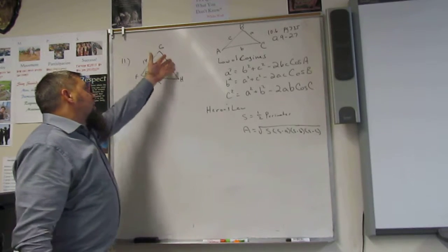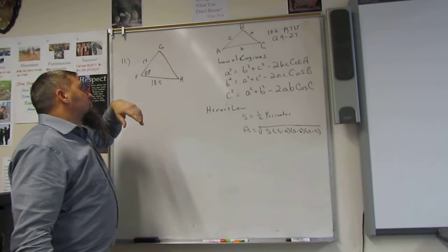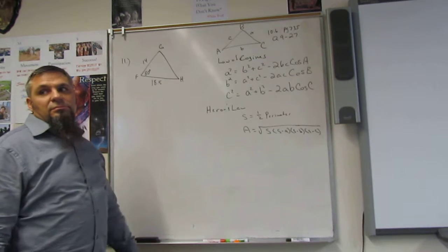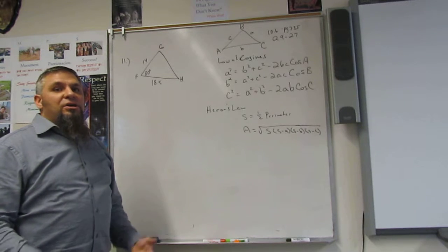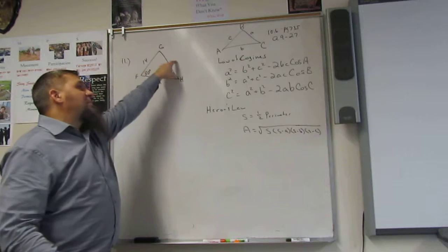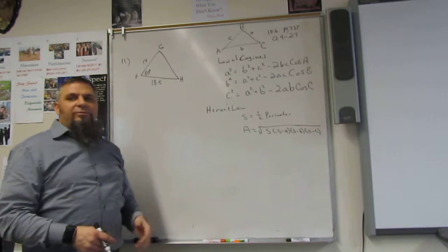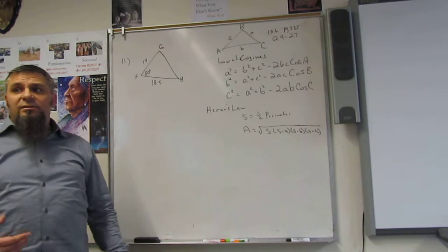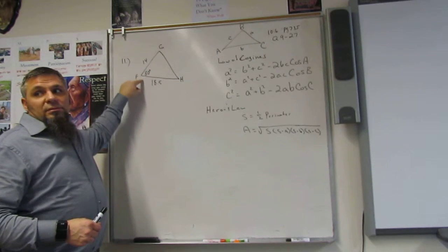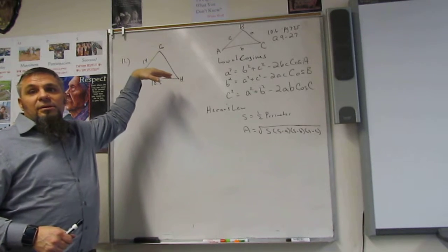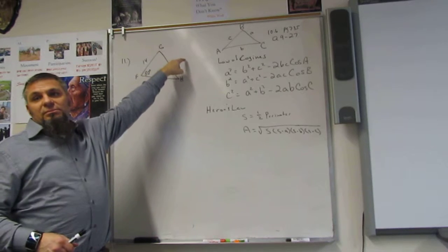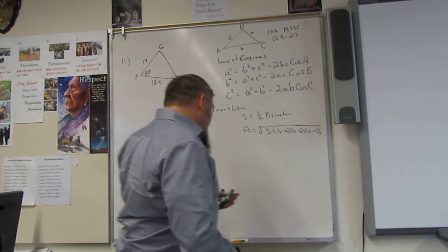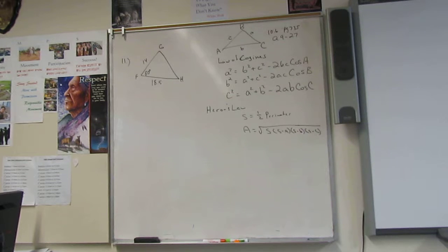So what we want to do is find the missing side. We're also going to find the missing angle. Now, I could use Law of Sines here if I had the side opposite to the angle that I had. So that's one thing you're going to learn. The more you're using the Law of Sines, you'll realize, oh, why can't we just use the Law of Sines? We've got an angle.